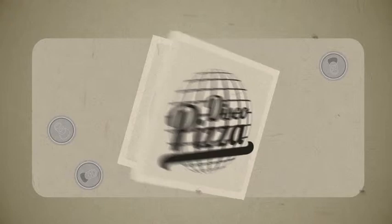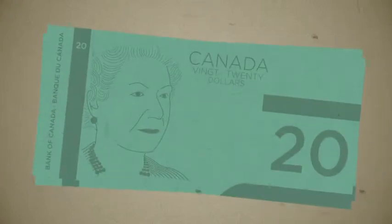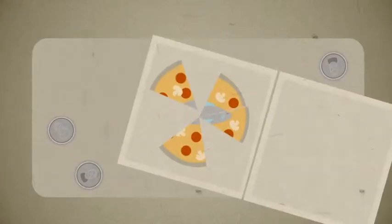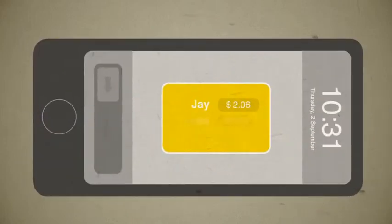Mike and his friends order a pizza. As usual, Mike is the only one with cash, so he picks up the bill. Before he lets them grab a second slice, he gets them to send an Interac eTransfer with their mobile device for their portion of the pie, and for the extra dipping sauce.